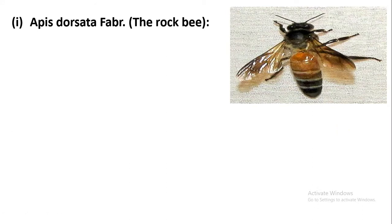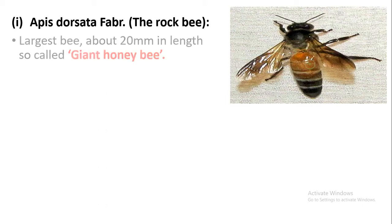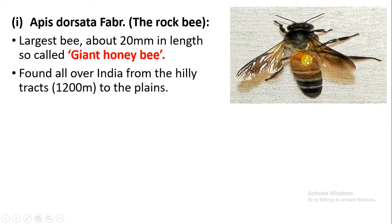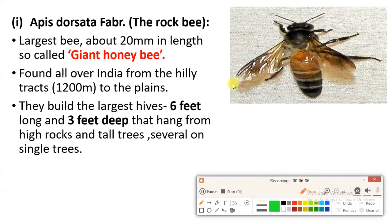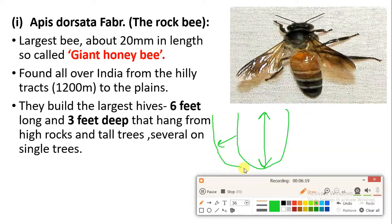Apis dorsata, the Rock bee, is found on mountains and tall trees. It is the largest bee, about 20mm in length — a giant bee. The hive is found in hilly regions at about 1,200 meters height and sometimes in the plains. The hive is about 6 feet long and 3 feet in depth, hanging from tall trees and high rocky mountainous regions.